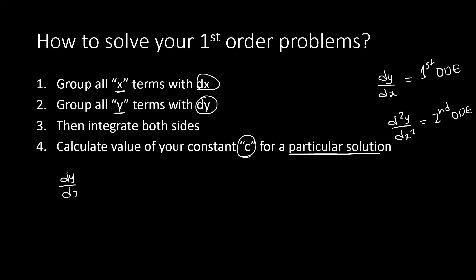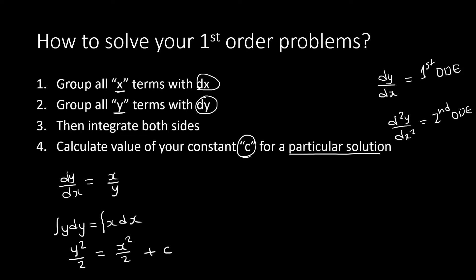For example, given dy/dx = 2x/y, determine the solution. Step one: cross-multiply to group y with dy and x with dx, giving y dy = x dx. Step three: integrate both sides — integrating with respect to y gives y²/2, and integrating the right-hand side with respect to x gives x²/2, then add the constant plus c.